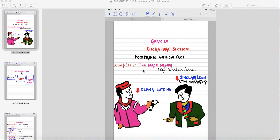So let's get started. As you can see there are two characters drawn here. First is Oliver Lutkins and second Sinclair Lewis who is the narrator. So these two are the main characters of the story.